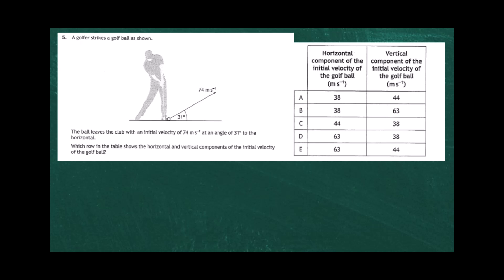Question 5 from the 2023 Higher Physics examination paper 1. A golfer tees off and the golf ball leaves the club with an initial velocity of 74 meters per second at an angle of 31 degrees to the horizontal. We need to resolve the velocity vector into horizontal and vertical components and match them up on a table. A quick sketch shows the 74 meters per second vector at 31 degrees to horizontal.